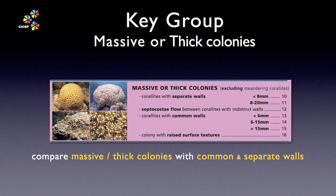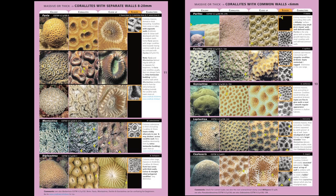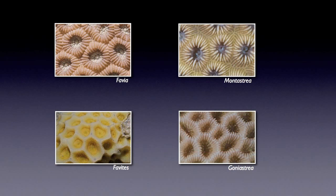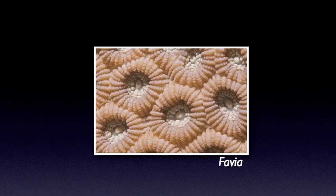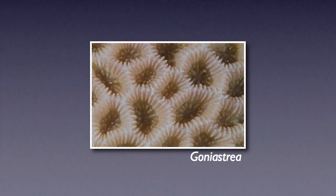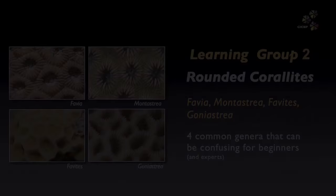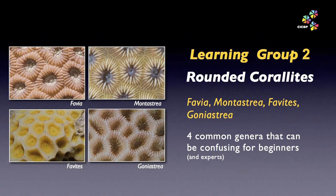Moving on, here is the subject matter for our next learning group. Please take the time to familiarise yourself with the separate and common wall pages of this section of the coral finder. You will notice four genera occur more than once: Fabia, Pavites, Montastria, and Goniastria. Each of these genera have more or less rounded coralites but with different wall structures. Together they make up the rounded coralite learning group — a learning group within the massive, thick colony key group.